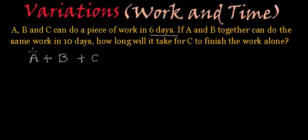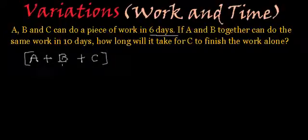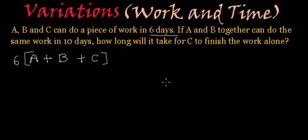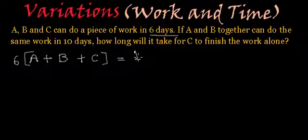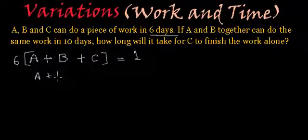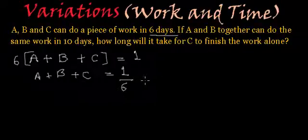That means the amount of work done by A, B and C together in one day will be A plus B plus C, and since they are finishing the job in six days, that means A plus B plus C multiplied by six will be equal to one — the whole work — because we consider the work as a unit. That means A plus B plus C is equal to one by six. We will call this equation number one.